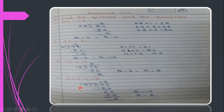Same way, 240 divided by 18. Smaller number outside, bigger number inside. Use the 18 table: take 24 first — 18×1=18, 24 minus 18 is 6. Bring down the 0 to get 60. Then 18×3=54, and 60 minus 54 is 6. So quotient is 13 and remainder is 6.